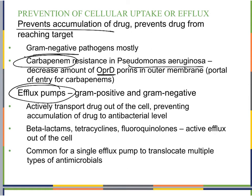The other example is efflux pumps, seen in both gram-negative and gram-positive bacteria. They actively transport antimicrobials out of the cell — they see the chemical and pump it right out, preventing it from accumulating to antibacterial levels. We see this with beta-lactams, tetracyclines, and fluoroquinolones, which are all actively pumped out of the cell.